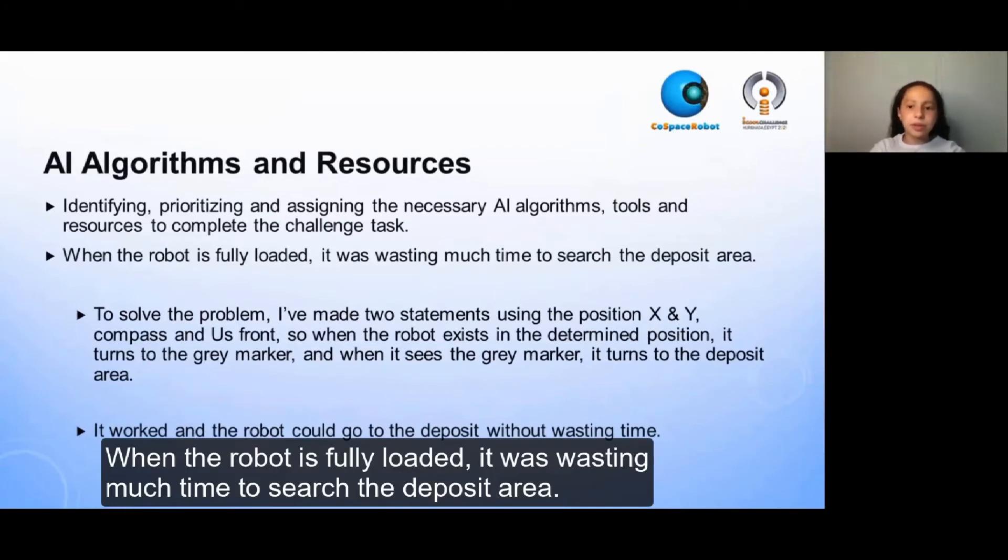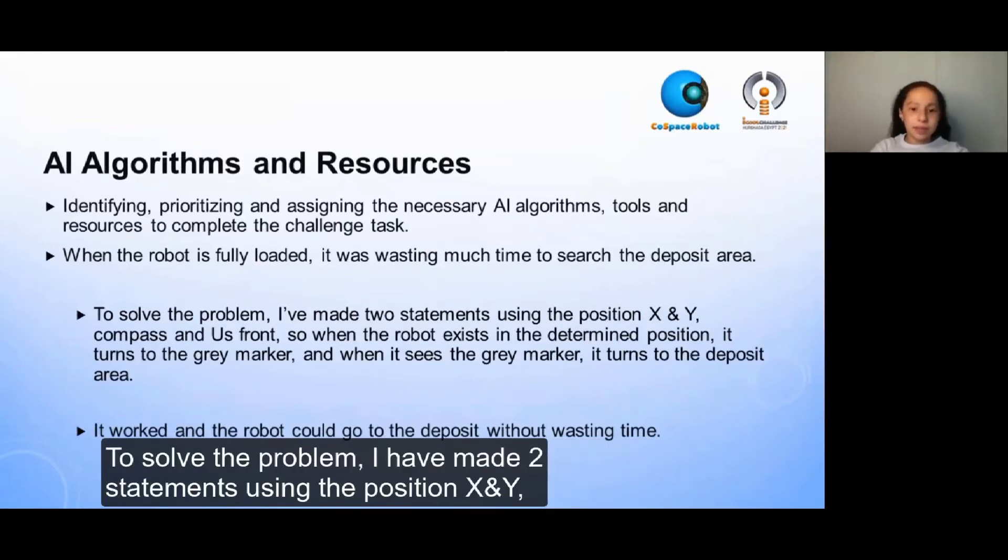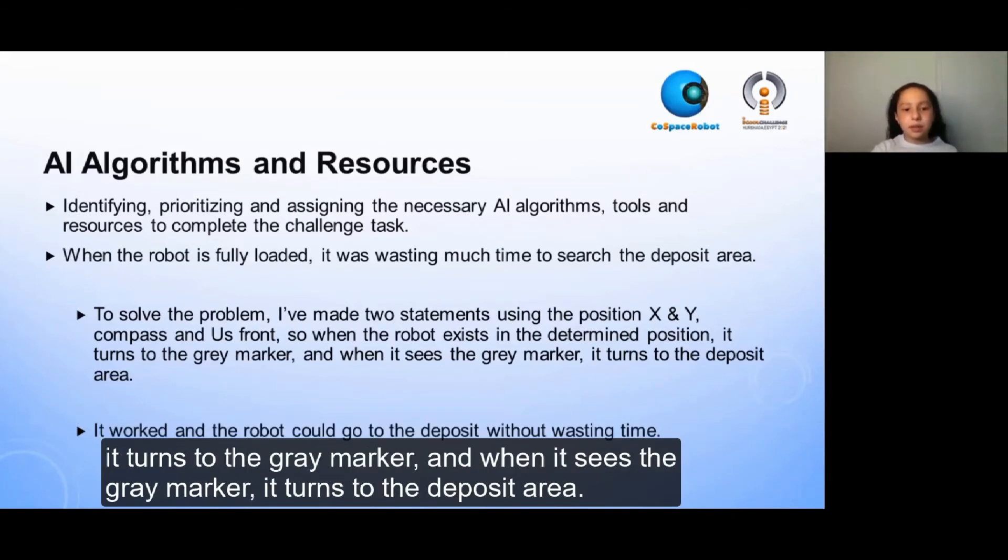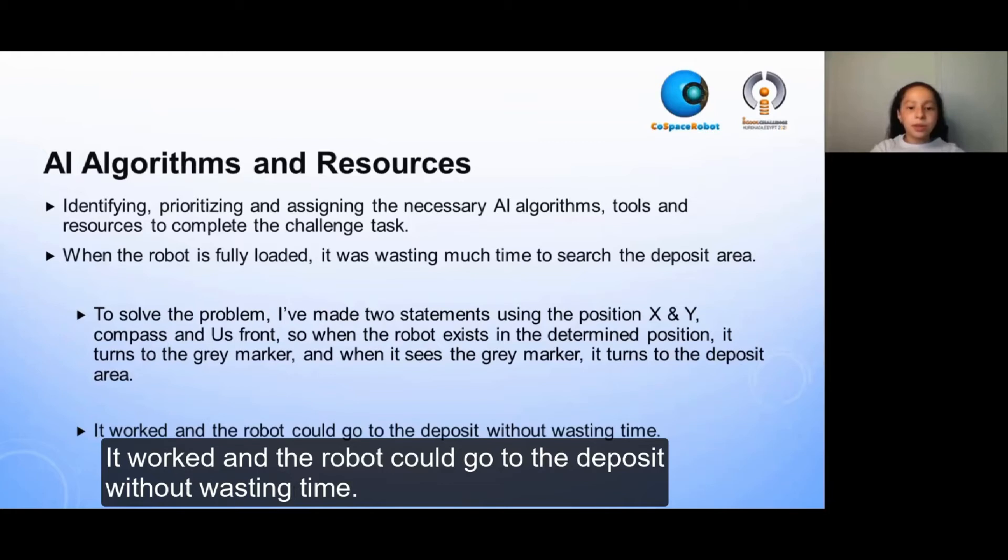To solve the problem, I have made two statements using the position x and y, compass and us front, so when the robot exists in the determined position, it turns to the grey marker, and when it sees the grey marker, it turns to the deposit area. It worked and the robot could go to the deposit without wasting time.